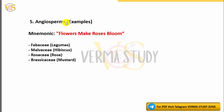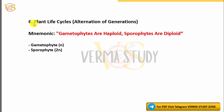5. Angiosperms Examples Mnemonic: 'Flowers Make Roses Bloom.' Examples include Fabaceae (Legumes), Malvaceae (Hibiscus), Rosaceae (Rose), and Brassicaceae (Mustard).